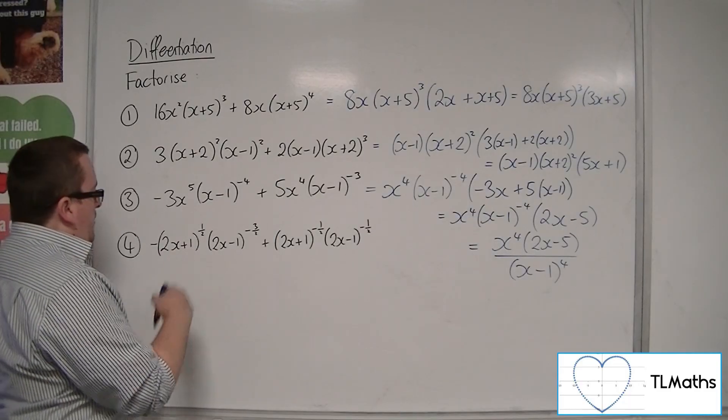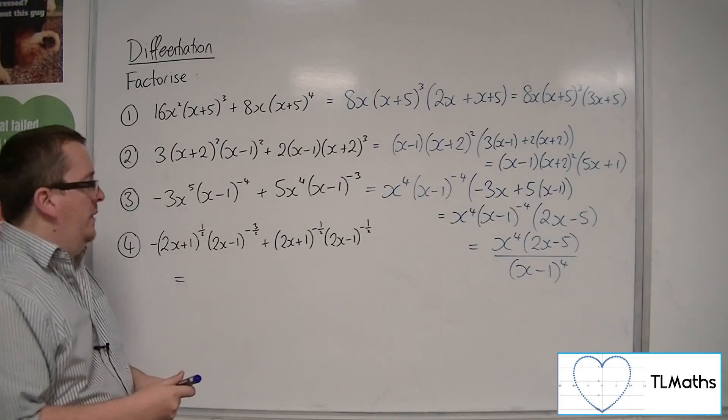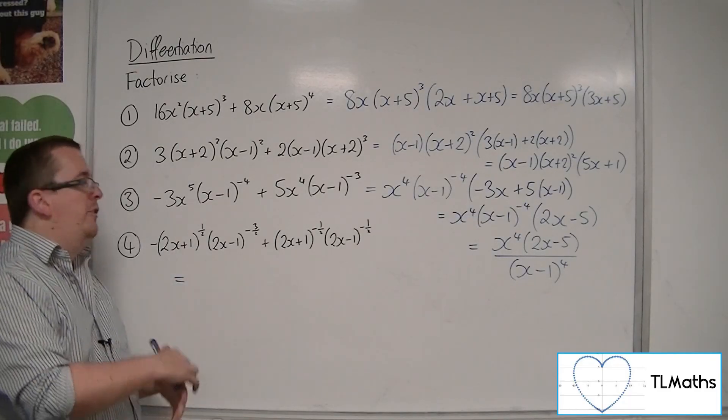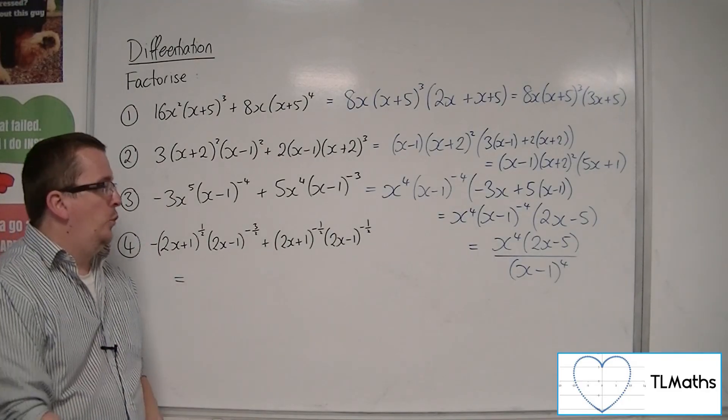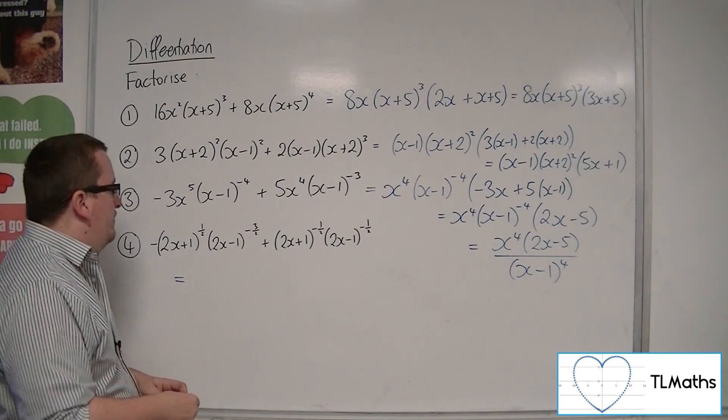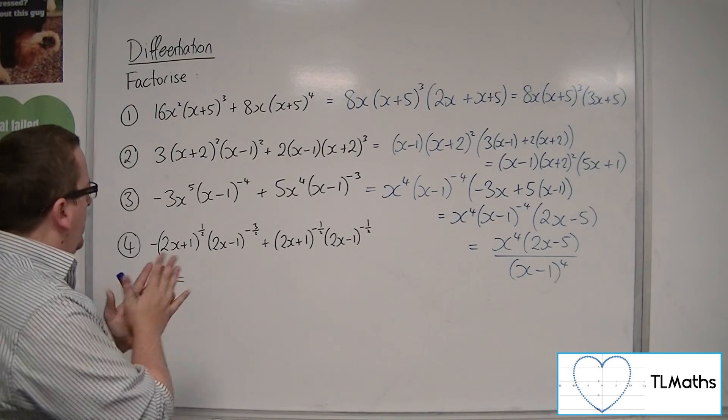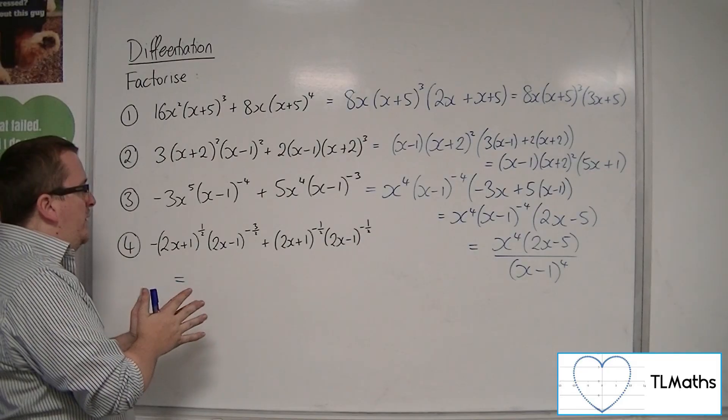Now let's have a look at number 4. This time we've got negative fractional indices, which makes it all the more challenging. But we'll have a go. We've got no numbers outside, so we're just dealing with the brackets.